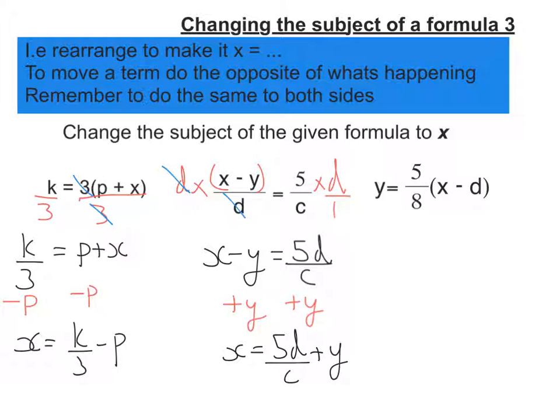Last one here, y equals 5 eighths of x minus d. So I need to get rid of this 5 eighths first. I'm going to do it in two goes. I'm going to get rid of the 8 first. Well, that's dividing everything. So I'm going to multiply both sides by 8. So the left-hand side is going to be 8y. The 8 will cancel, because that's sort of the point of doing it. And I'm going to be left with the right-hand side 5 brackets x minus d.